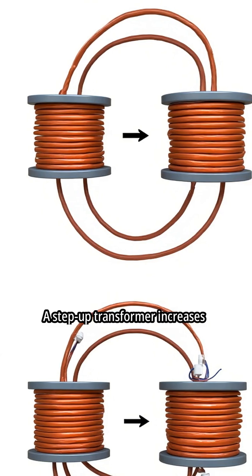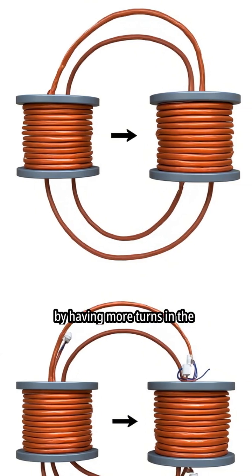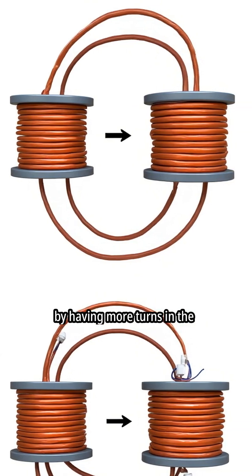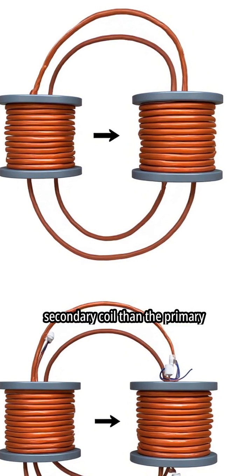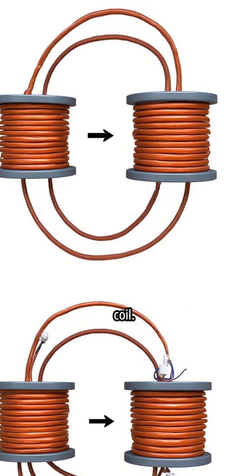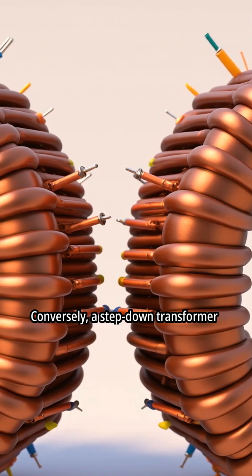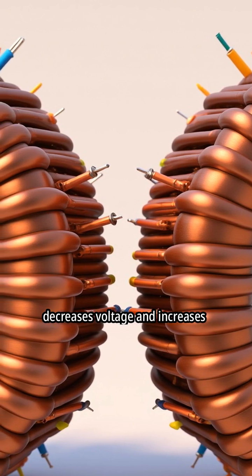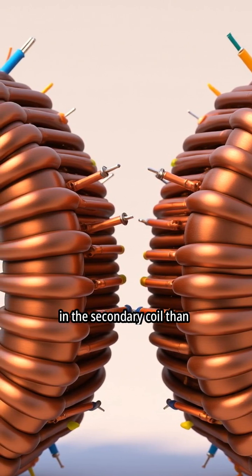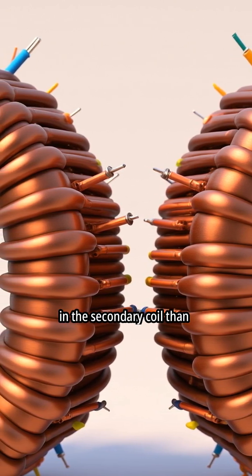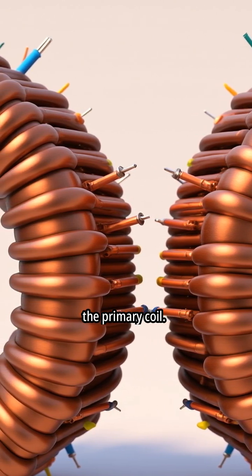A step-up transformer increases voltage and decreases current by having more turns in the secondary coil than the primary coil. Conversely, a step-down transformer decreases voltage and increases current by having fewer turns in the secondary coil than the primary coil.